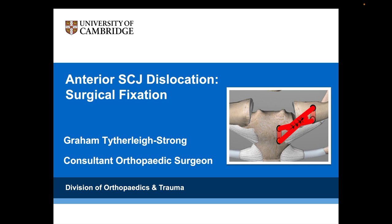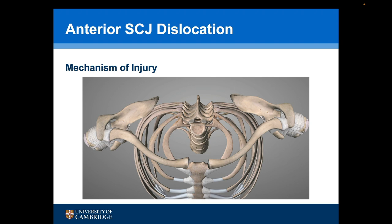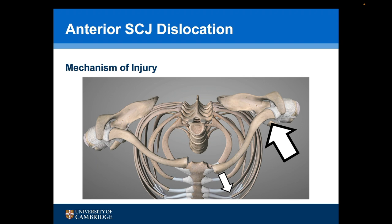Anterior sternoclavicular joint dislocation surgical fixation. This is an axial view MRI scan showing an anterior dislocation of the left sternoclavicular joint. The mechanism of injury is an oblique force to the outer edge of the anterior shoulder, which forces the scapula posteriorly and the medial end of the clavicle anteriorly, dislocating the sternoclavicular joint anteriorly.